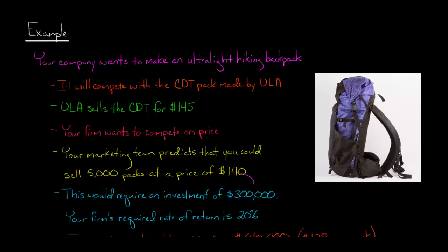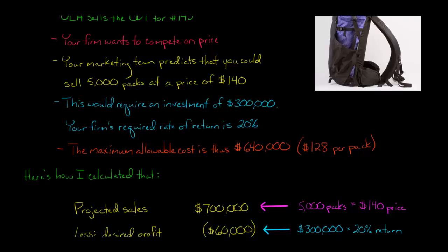The required rate of return is 20% for our company. That's what your company has decided, that it wants 20% return on any projects. So basically, 20% times $300,000, they're wanting to make a $60,000 profit on this. The maximum allowable cost, the target cost in this situation is going to be $640,000.